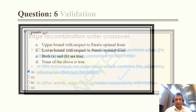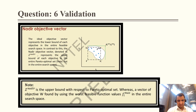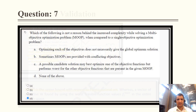Question 6: The nadir point is the upper bound with respect to the Pareto optimal front, so the correct option is A. The validation: the nadir point is the upper bound with respect to the Pareto optimal solution. The nadir objective vector represents the upper bound of each objective in the entire Pareto optimal set. This is the validation for question 6.